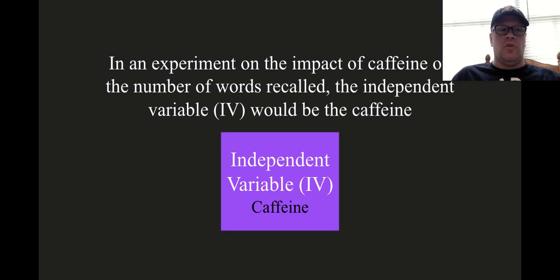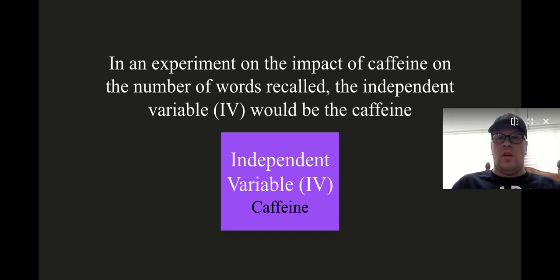So again, the independent variable is always going to involve some type of systematic variation on the conditions that the experimenter is evaluating in an experiment. So, potentially, if we had an experiment on the number of words recalled, the independent variable might be caffeine.